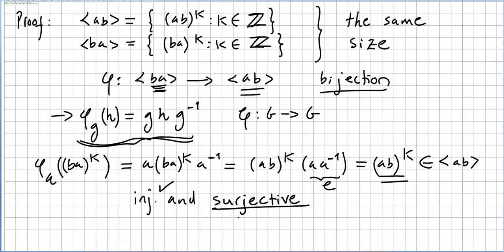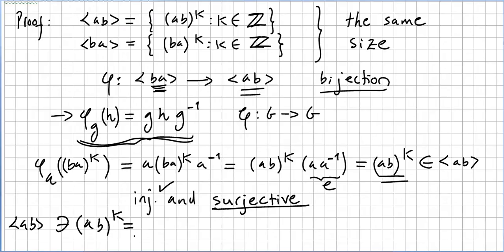The injectivity is straightforward. For surjectivity — given any element (ab)^k in the set ⟨ab⟩, it is the image of (ba)^k under φ. That is, any (ab)^k can be written as φ((ba)^k), so every element of ⟨ab⟩ is in the image of φ, confirming surjectivity.